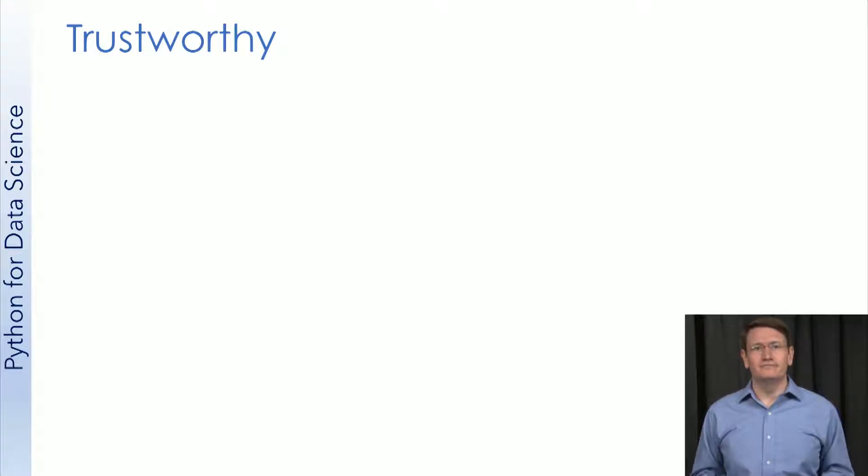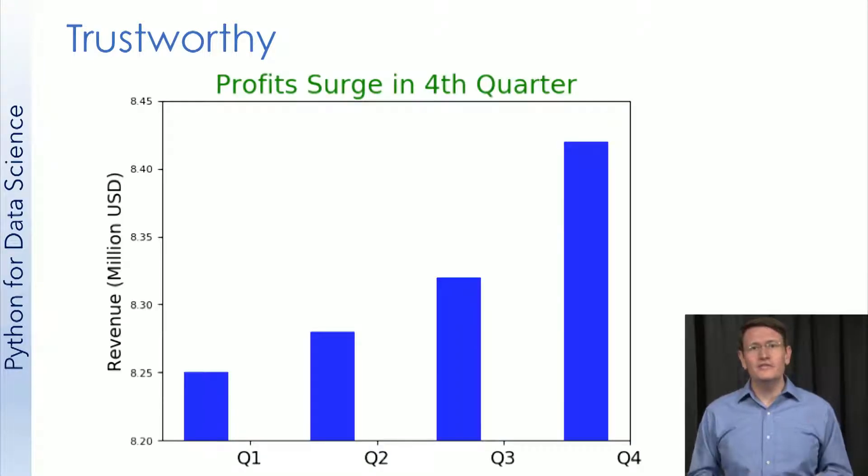Let's look at a quick example. Here's a hypothetical figure you might be shown in a business meeting. Take a look and see if you can spot what's wrong with it. If you notice the y-axis, you realize this isn't a surge at all. The y-axis is zoomed into just a small part of the graph. We're looking at a roughly 2% increase between Q1 and Q4. That's hardly surging.